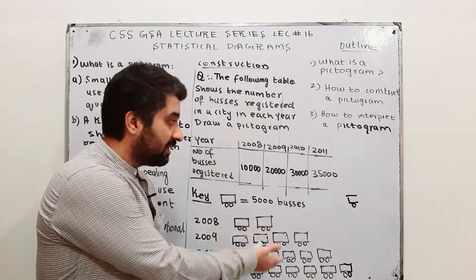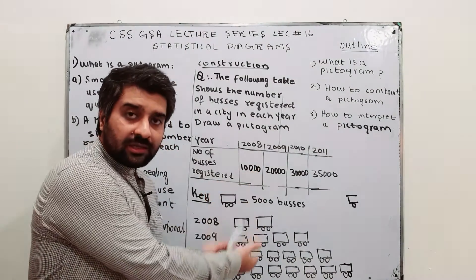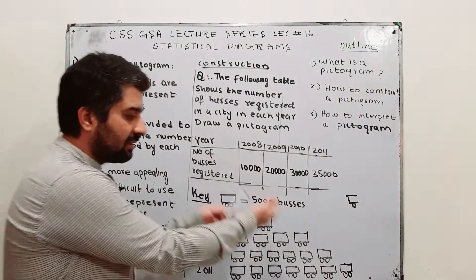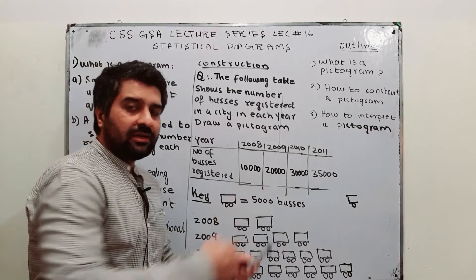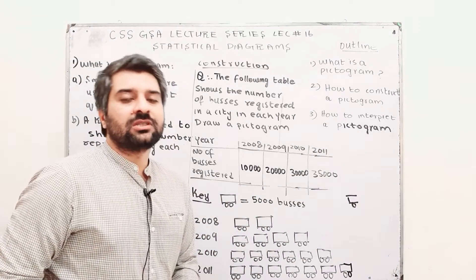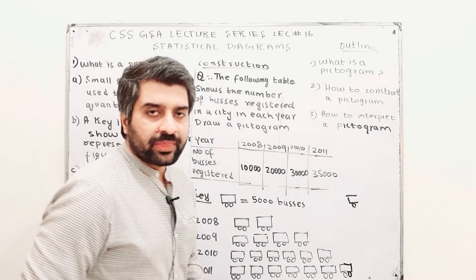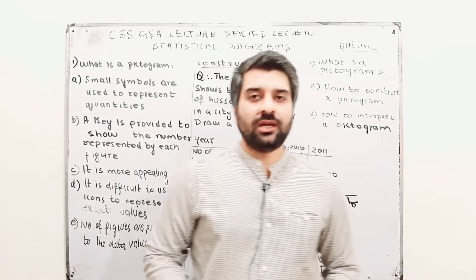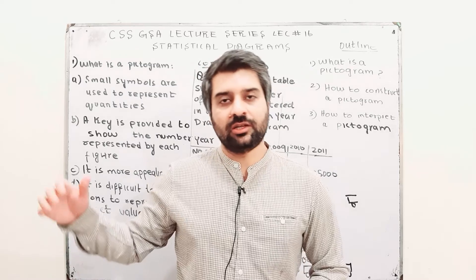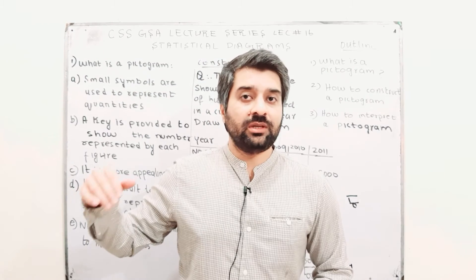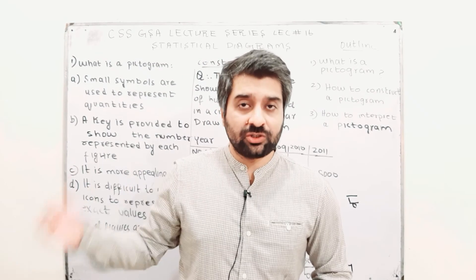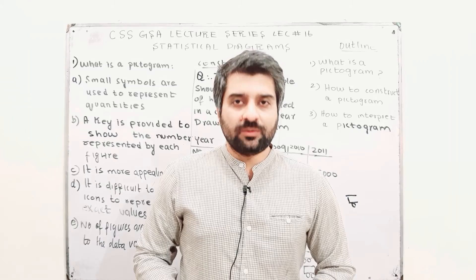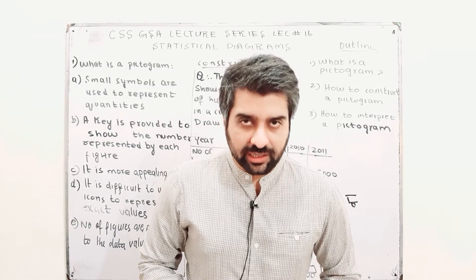Key is important — you display data using figures, and each figure represents a certain number. This makes the diagram more appealing. All the characteristics of a pictogram are present in the diagram. This is the construction of a pictogram. In my next video I will use a pictogram to interpret data. Keep watching, thank you so much.